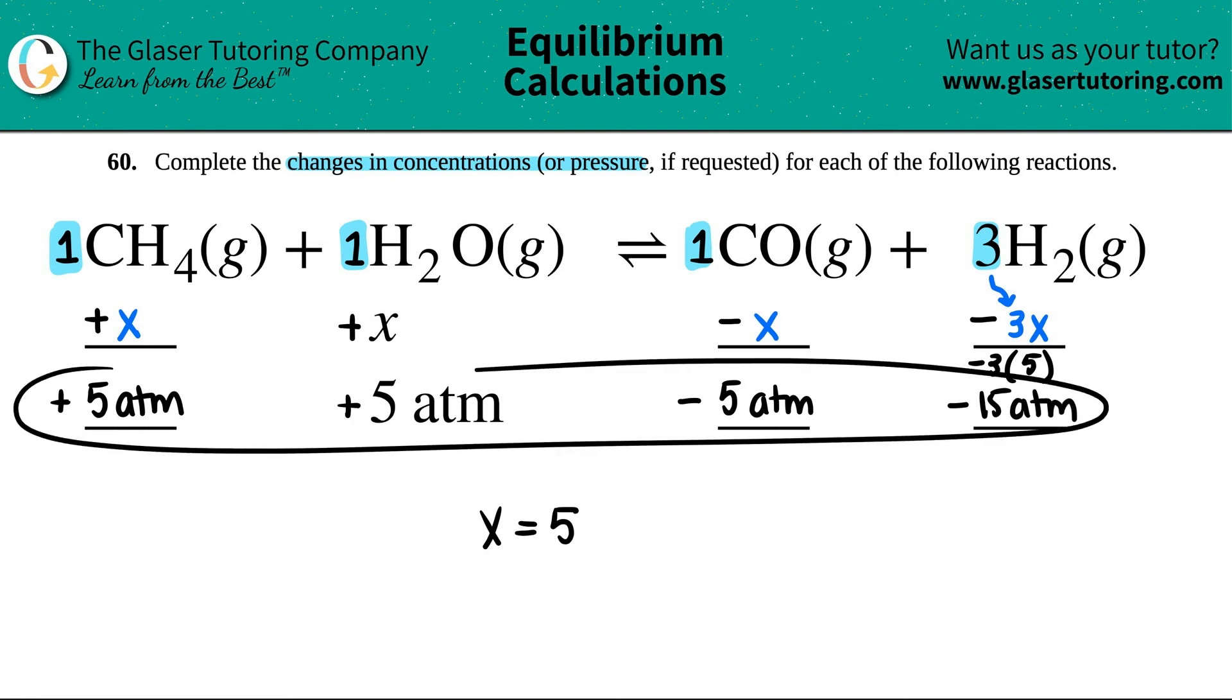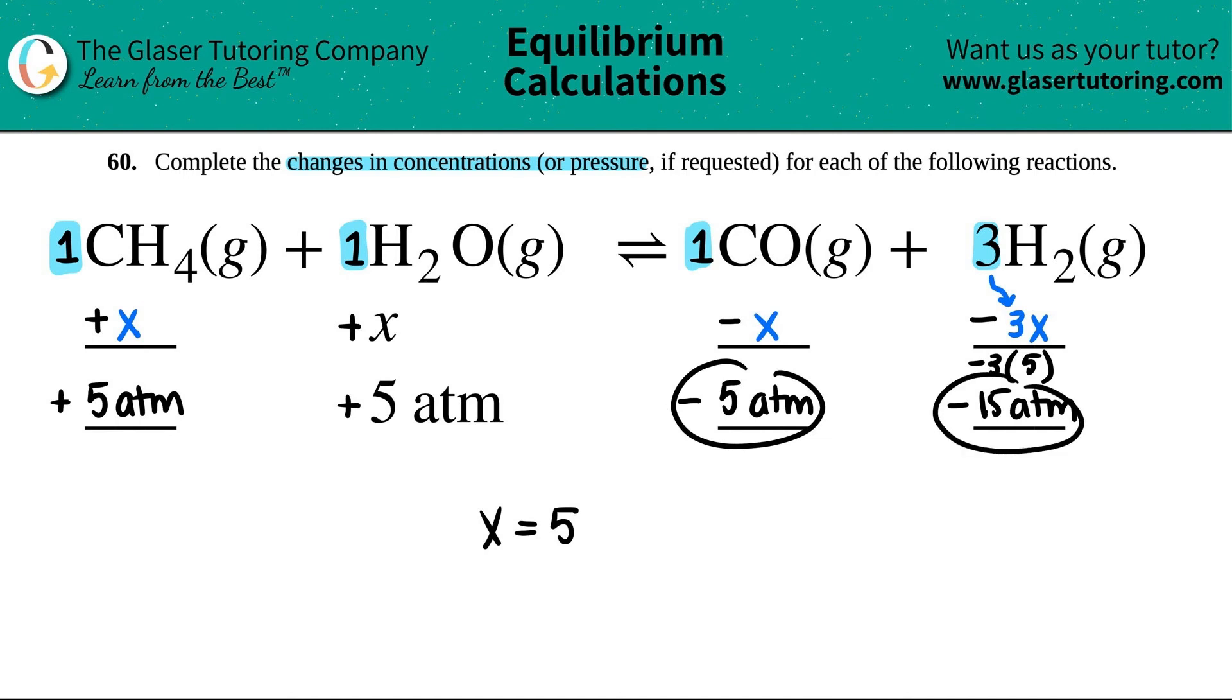Those are all your answers. Remember, there is no such thing as negative pressure. This negative just means that you are dropping by 5 atm or 15 atm. We do not know what the initial values were, but they had to have been higher than 5 for CO and higher than 15 for H2, because we can't end up with negative values. We're just focusing on changes on this one, so we are done.